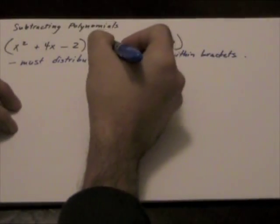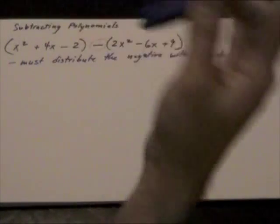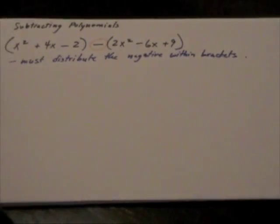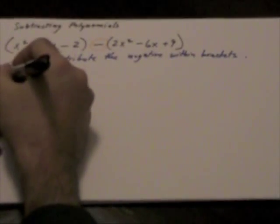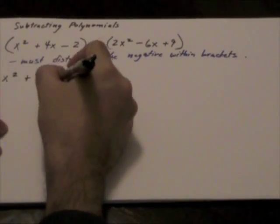So what we're doing is we're really multiplying this negative inside the bracket. But here's a quicker tip. What we're going to do is because there is no negative with this first set of brackets, this first set of brackets we can just write as follows: x squared plus 4x minus 2.